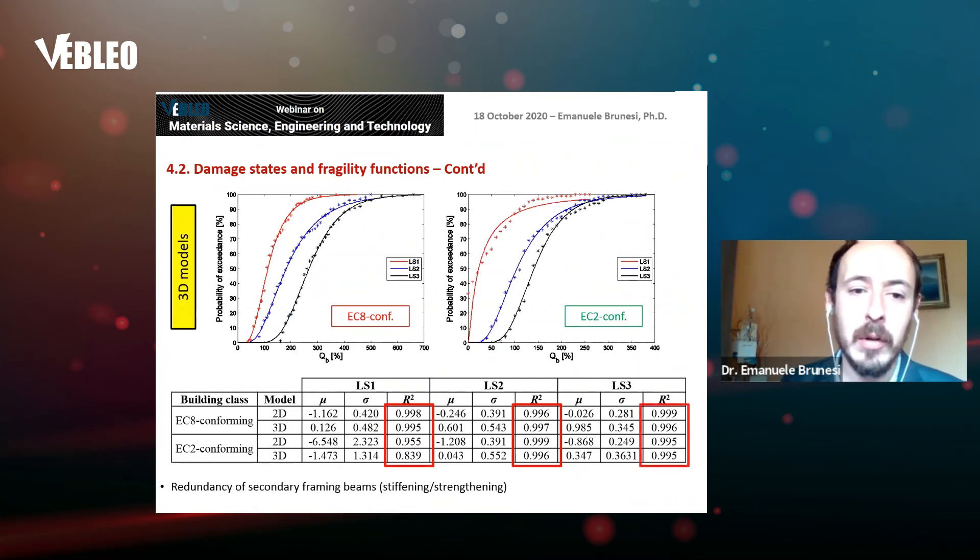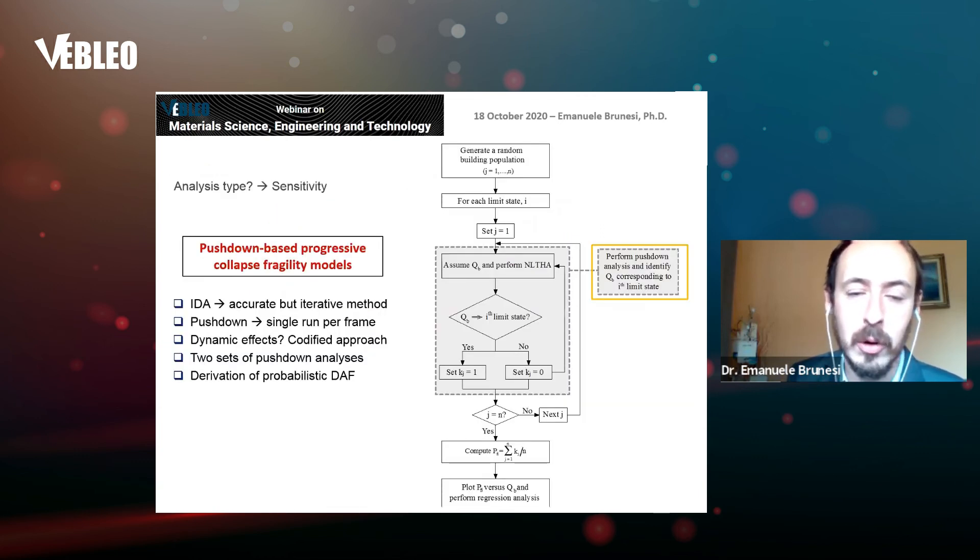The same type of fragility models obtained for 3D structural representations. You can see median and standard deviation for the log-normal fragility models derived, as well as R-squared, which is the goodness of fit. It is a number between 0 and 1, with 1 meaning perfect fit. You can see quite low scatter and quite high goodness of fit for all these simulations.